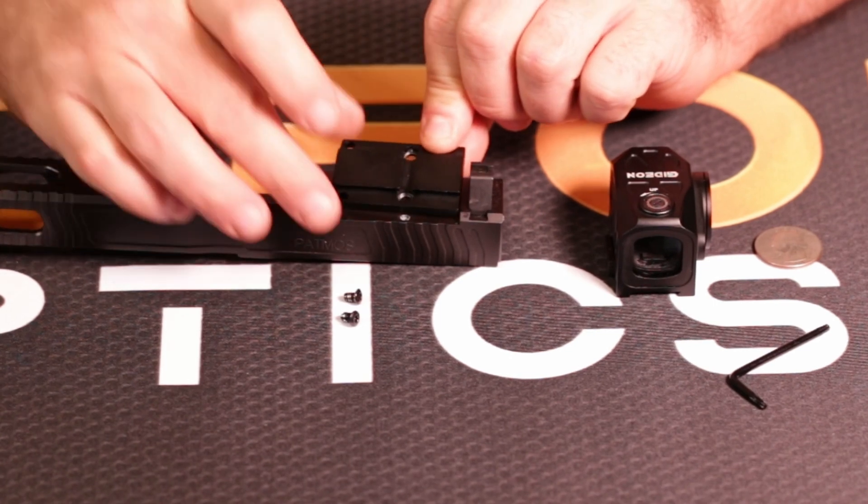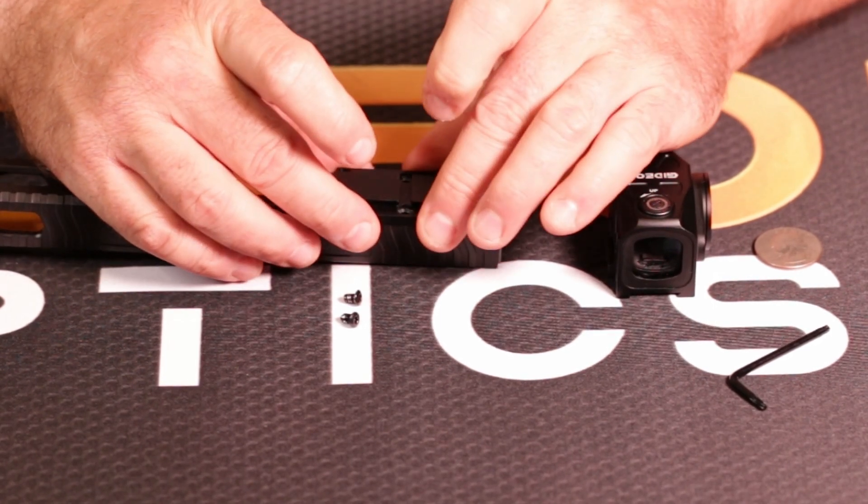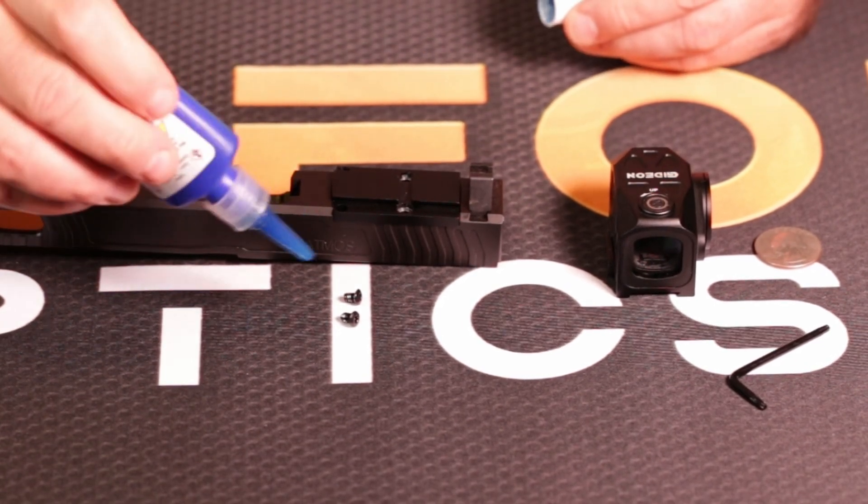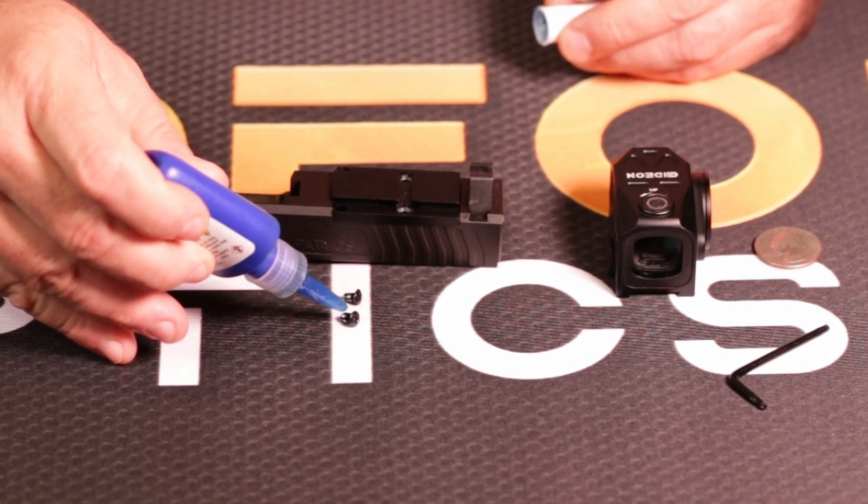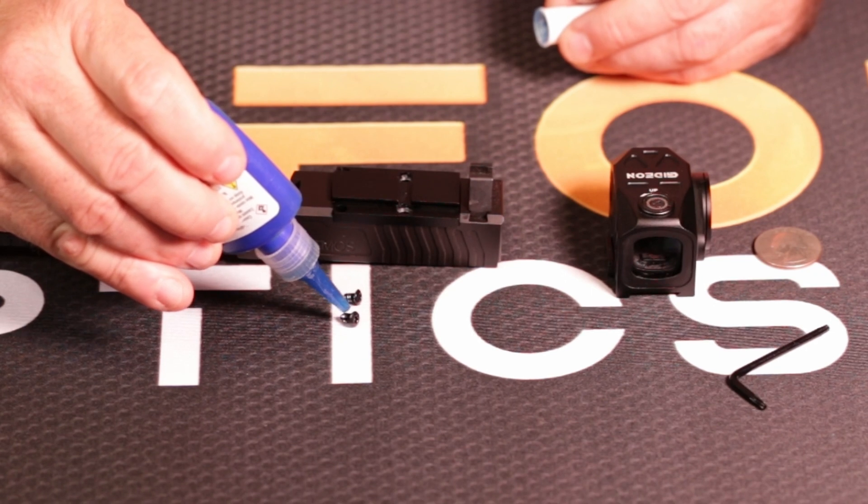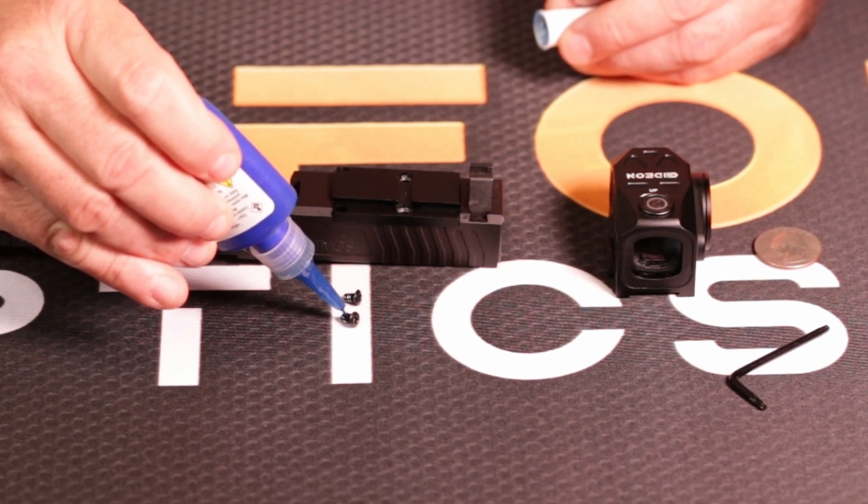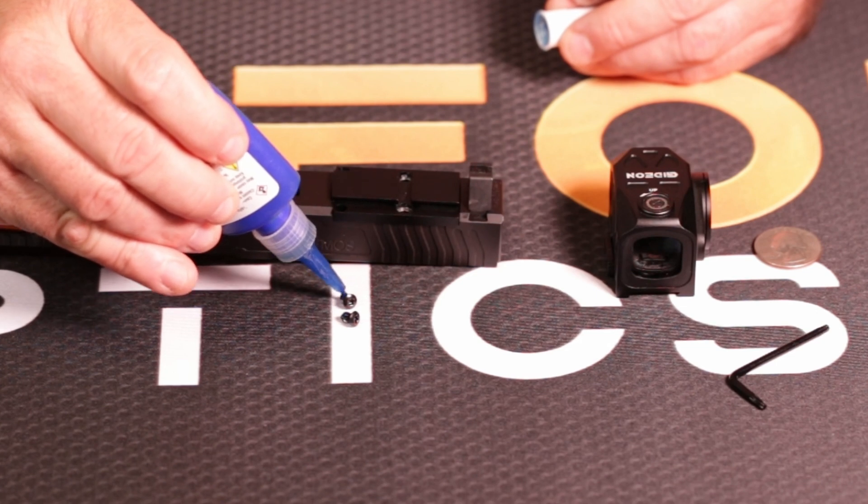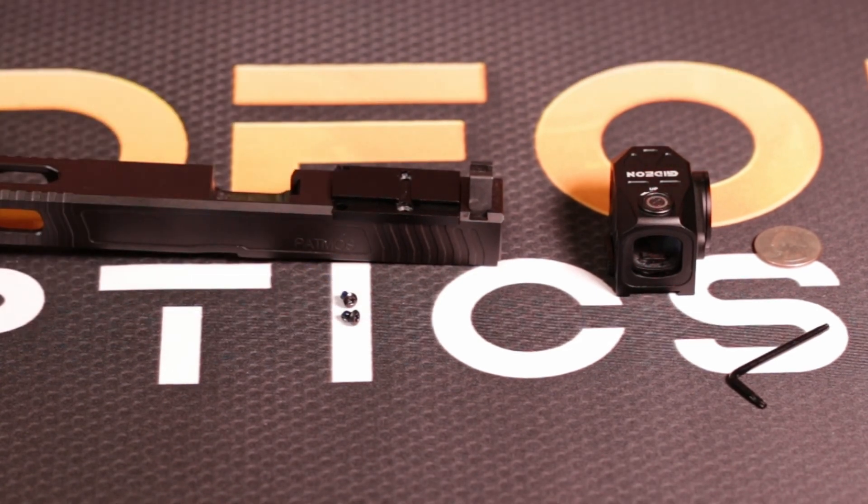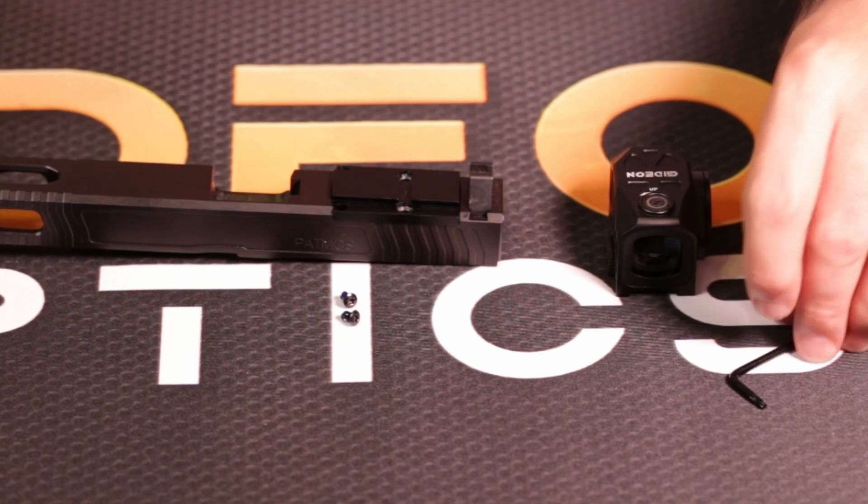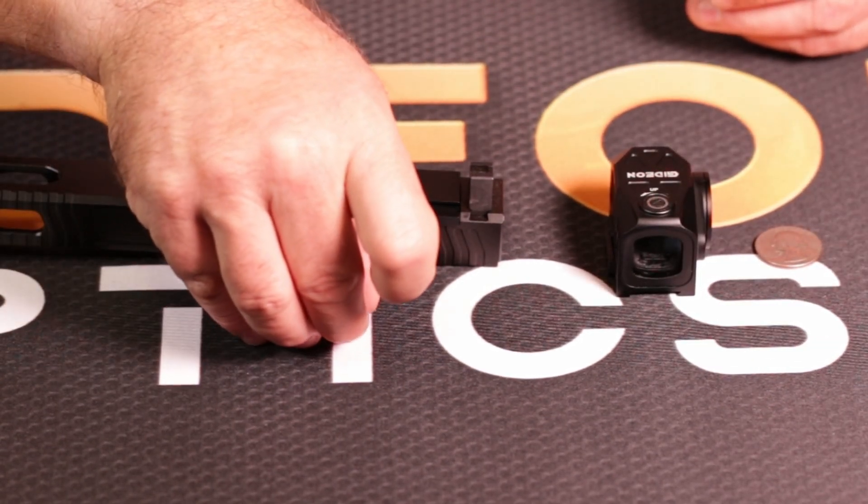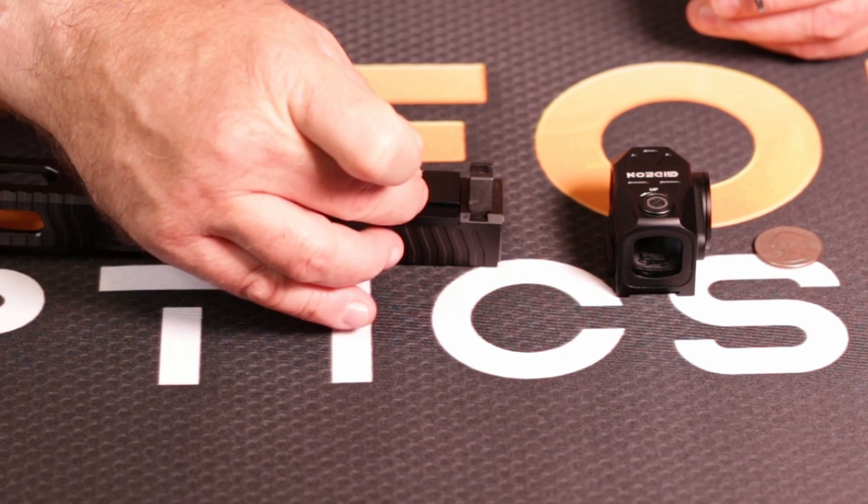We're going to drop that in place there. Get some blue thread locker, and I'm going to put a line of blue thread locker on the threads of each of these screws. These slides are cut for 6-32 thread pitch, which just happens to be my favorite screw thread pitch for this. It's a T10 Torx or star head.